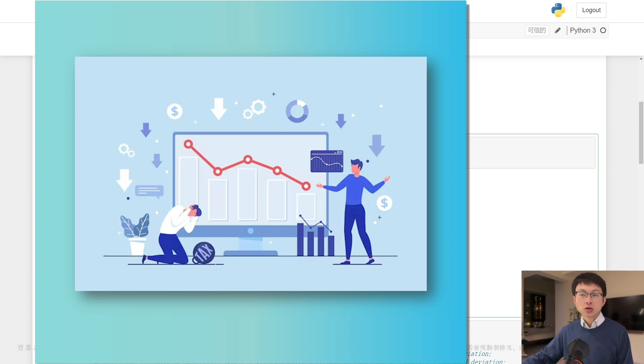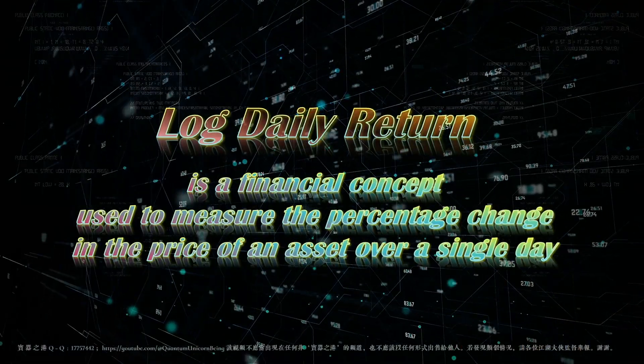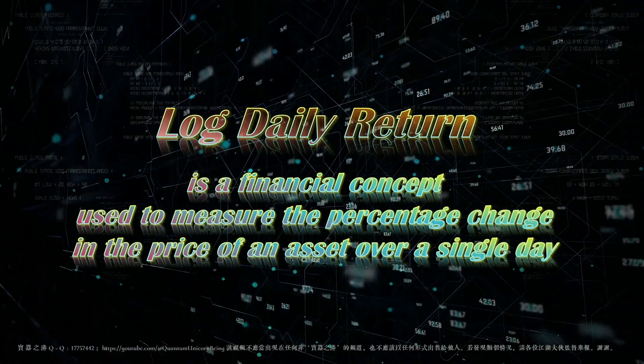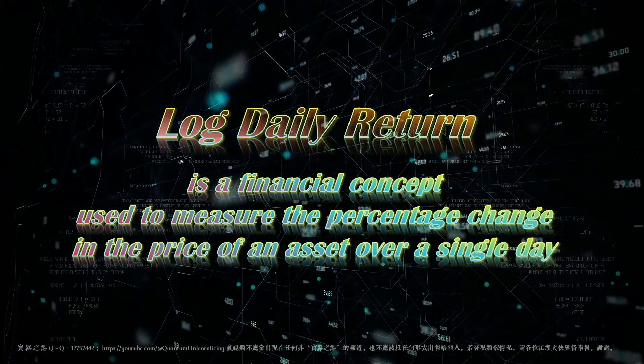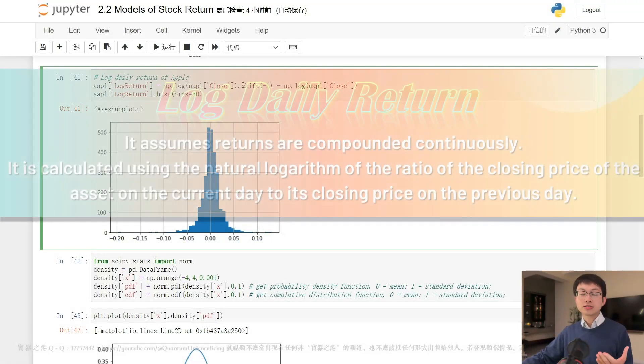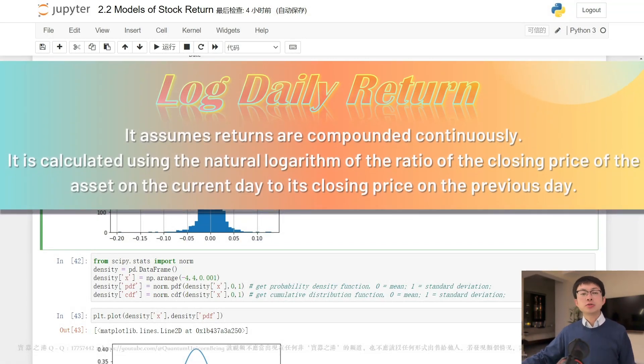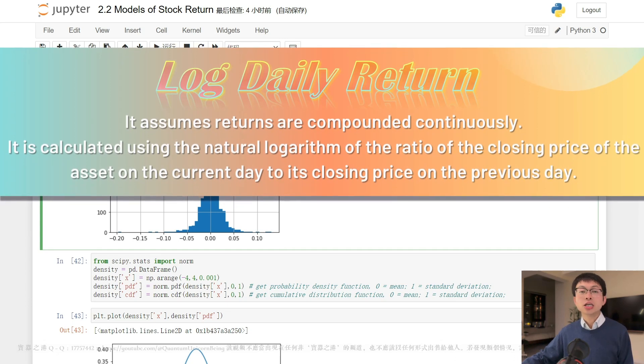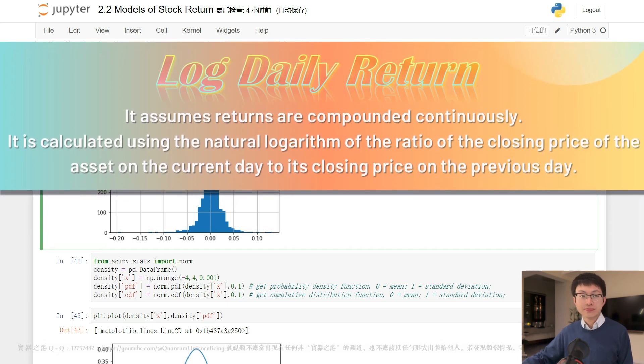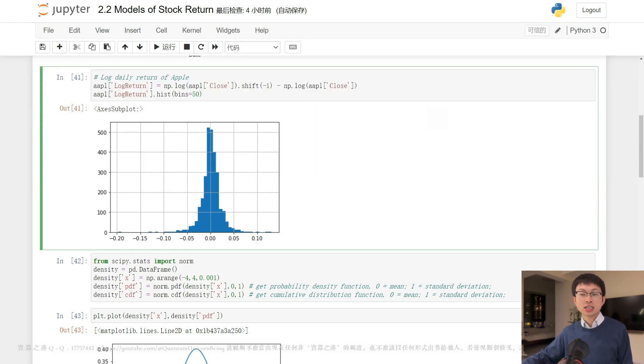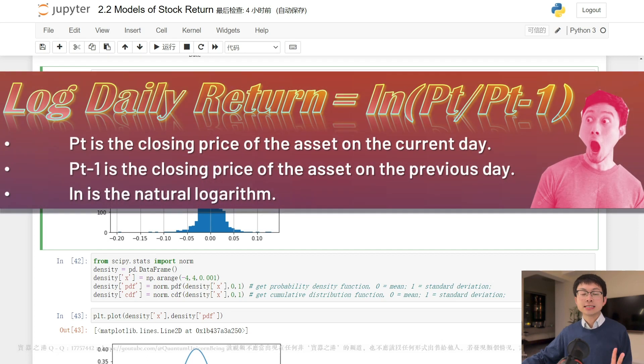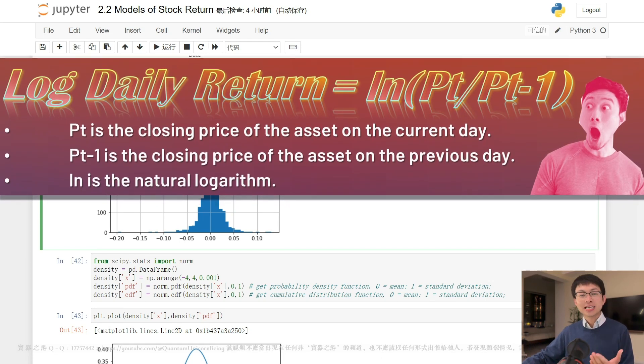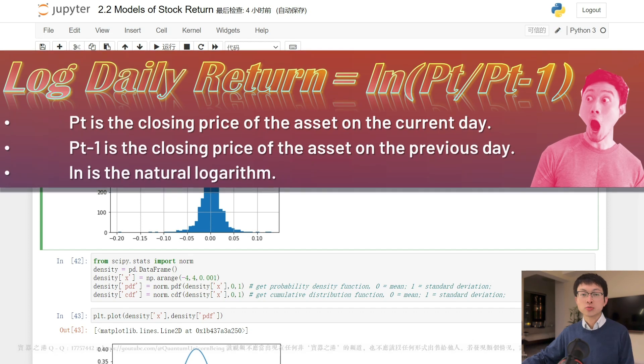Log daily returns is a financial concept used to measure the percentage change in the price of an asset, such as a stock or a cryptocurrency, over a single day. It assumes returns are compounded continuously, rather than across subperiods. It is calculated using the natural logarithm of the ratio of the closing price of the asset on the current day to its closing price on the previous day. Here we can see the formula for calculating the log daily return, where Pt is the closing price of the asset on the current day, Pt-1 is the closing price of the previous day, and LN is the natural logarithm.